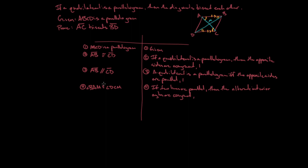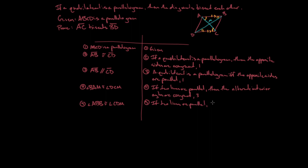And I'm going to repeat the exact same thing for the other pair of alternate interior angles. Angle ABM is congruent to angle CDM — same reason: if two lines are parallel, then the alternate interior angles are congruent, from statement 3.